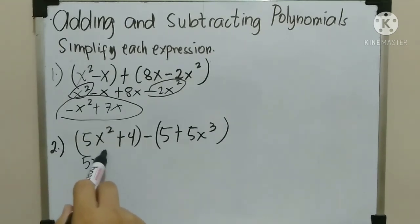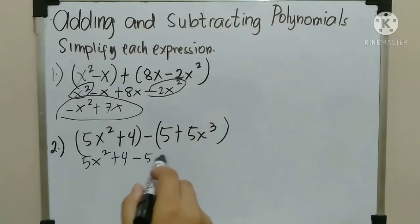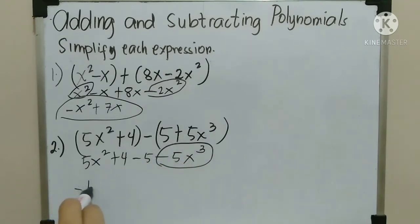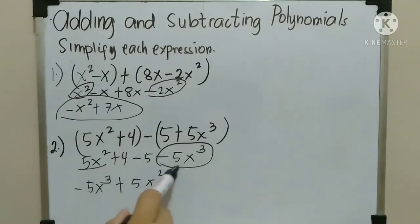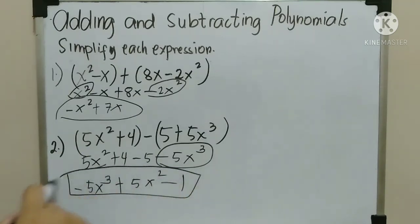Next, Number 2: (5x² + 4) plus (negative 5 minus 5x³). Copy 5x squared plus 4. Then, negative times positive 5 — negative 5. Negative times 5x cubed — negative 5x cubed. Combine like terms: negative 5x cubed has no pair, copy it. 5x squared has no pair, copy it. Then, positive 4 minus 5 — the answer is negative 1. Therefore, the answer is negative 5x³ plus 5x² minus 1.